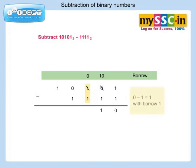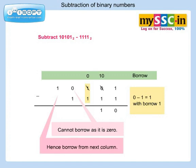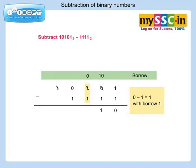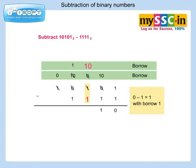Let's move to the next left column. Again 0 minus 1 is equal to 1 with borrow 1. We cannot borrow from the immediate left column as it is already 0. Hence, let's borrow from the next left column. Thus this column becomes 0 and the next becomes 10 in binary, that is 2 in decimal. But this lends 1 to the next right, that is the current column, and it becomes 1. After borrowing, the current column becomes 10 in binary, that is 2 in decimal. 2 minus 1 is equal to 1.